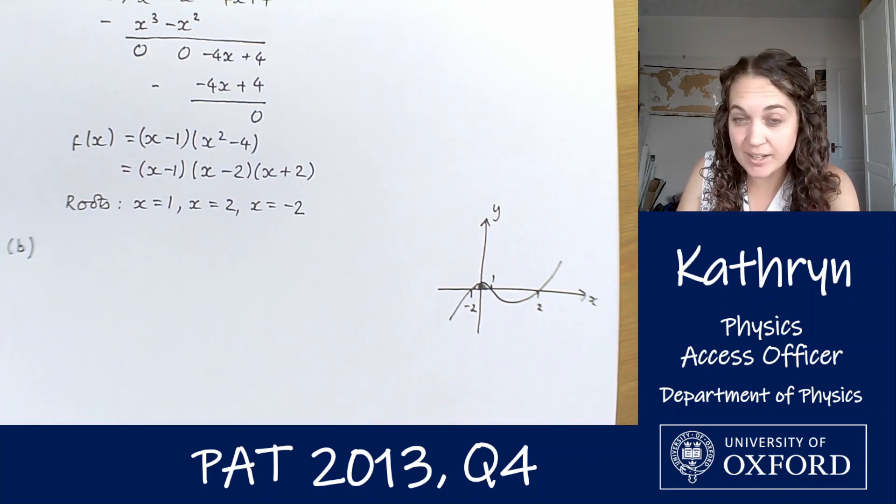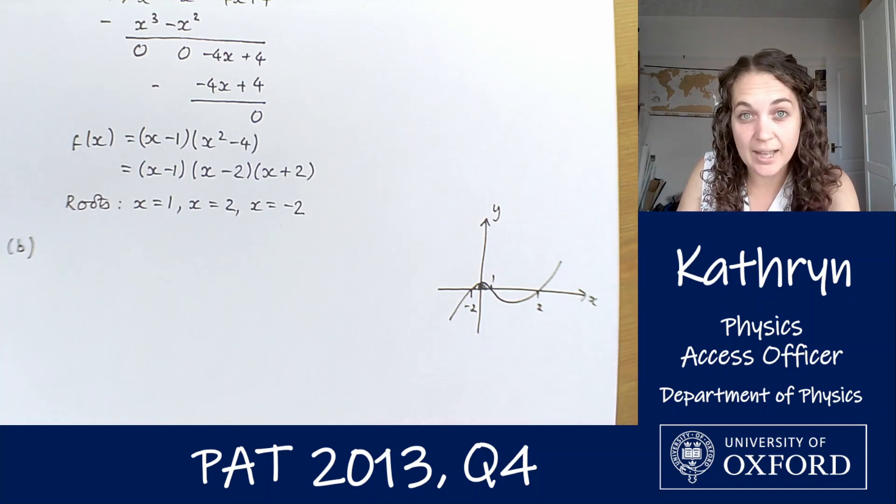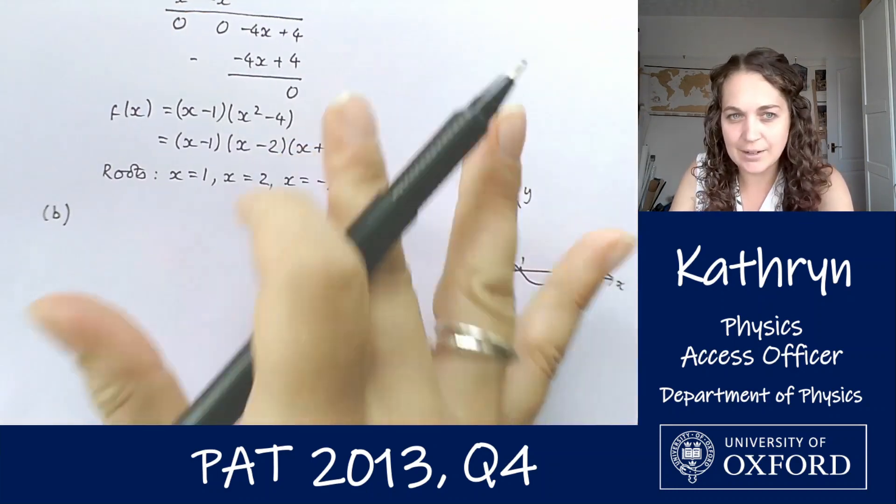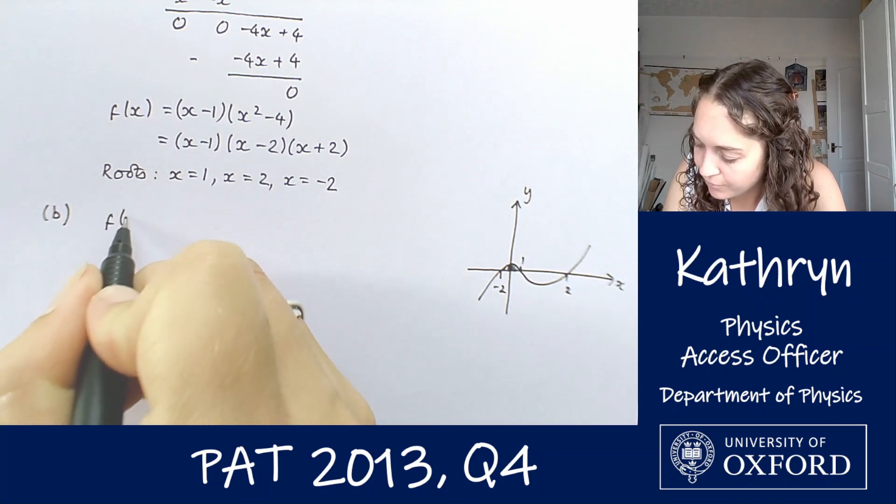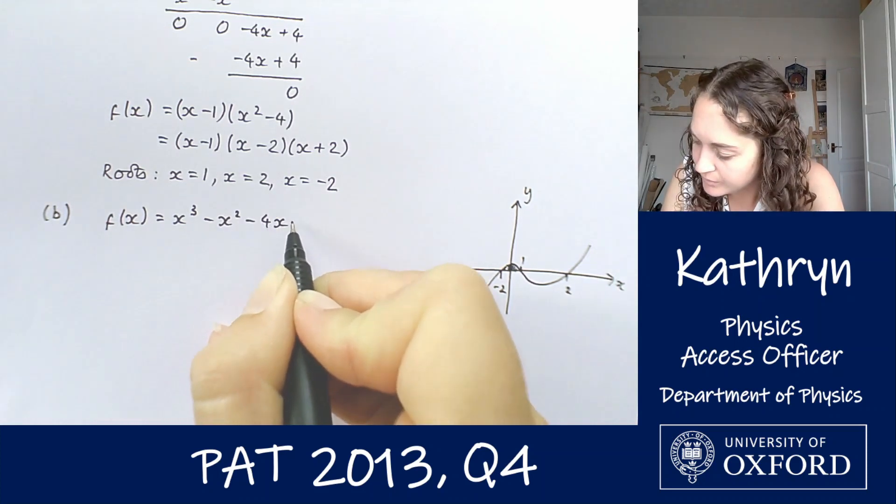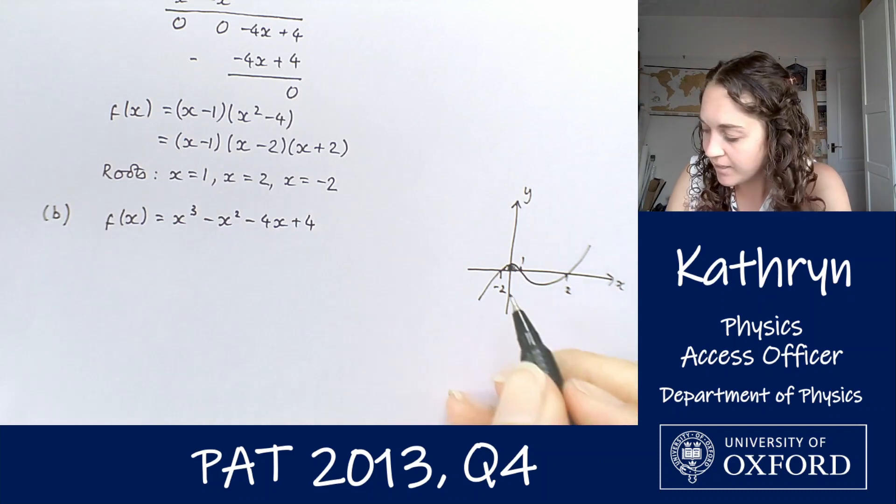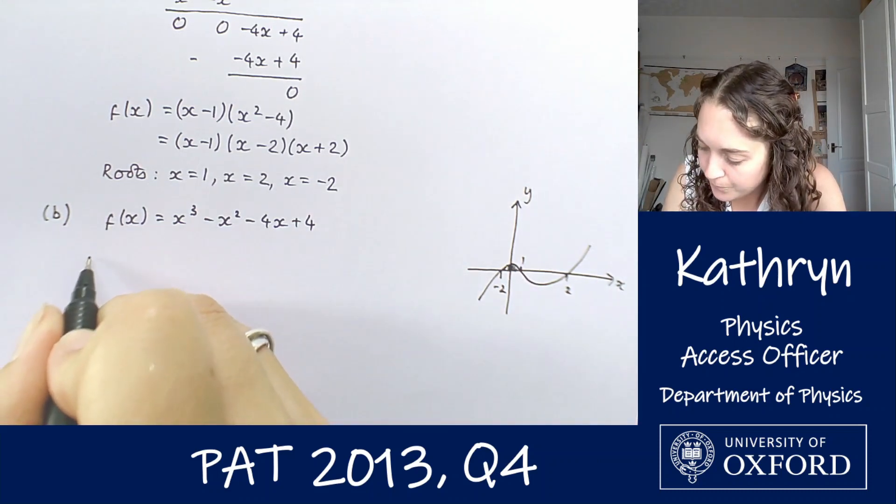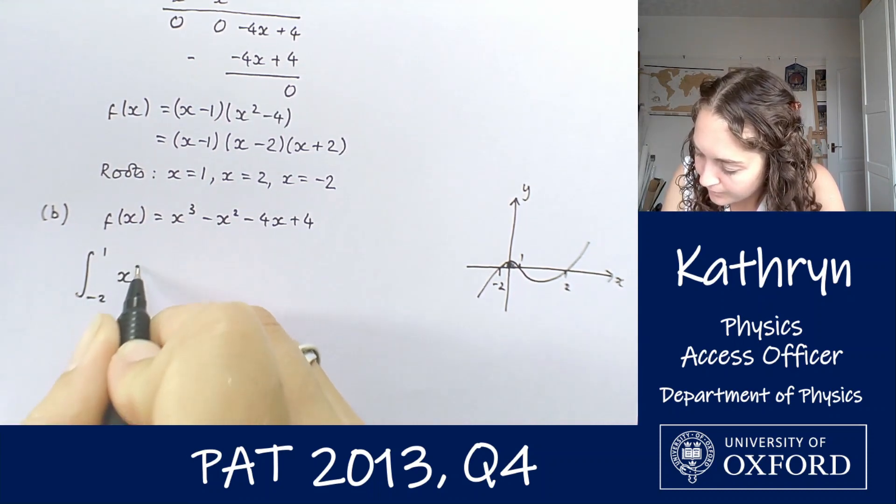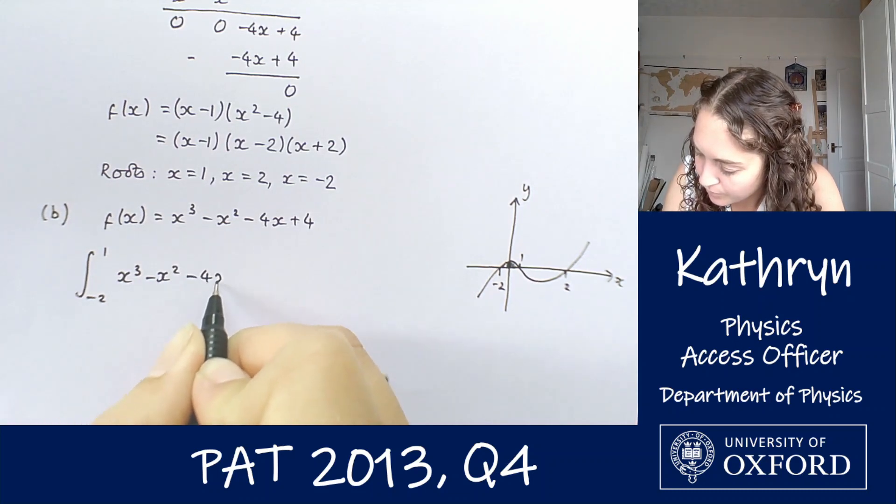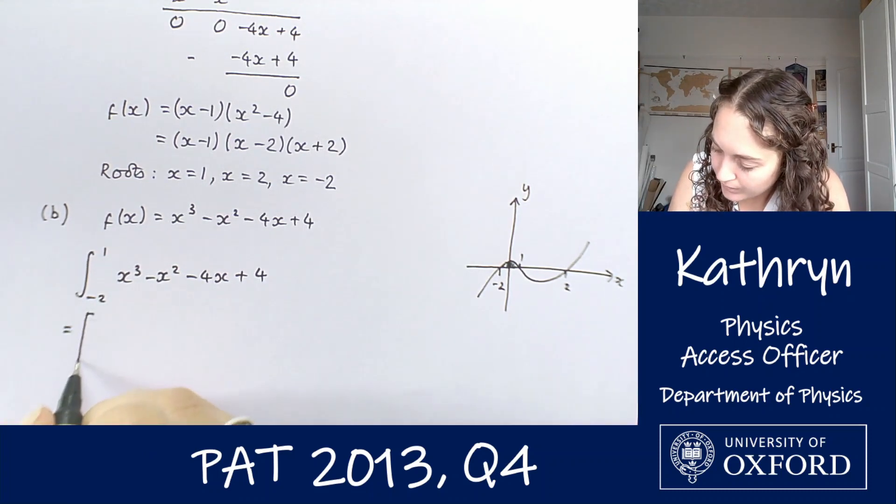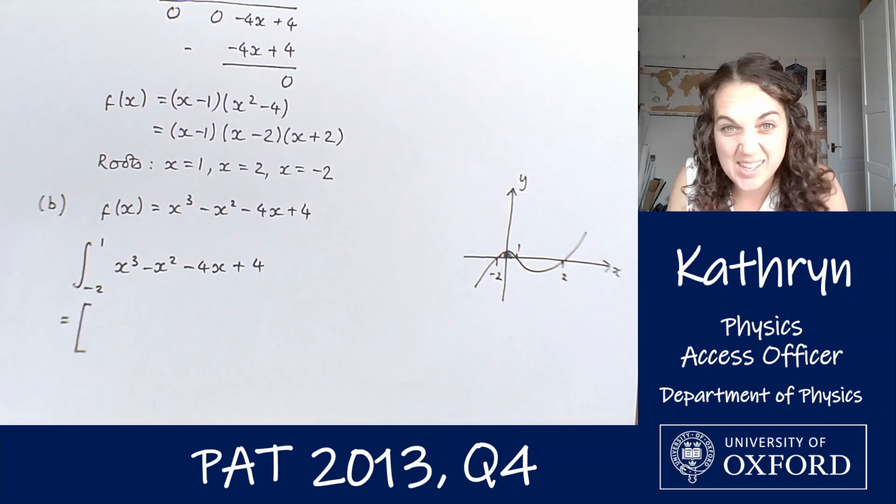So what we're going to do is we're just going to integrate this function between minus 2 and 1. Our function is up here. Let's rewrite it down here so we can see what we're doing. So we're starting with f(x) equals x cubed minus x squared minus 4x plus 4. And we're going to integrate that between minus 2 and 1.